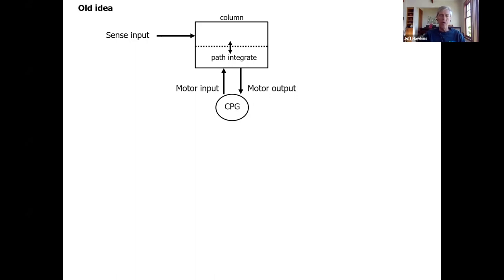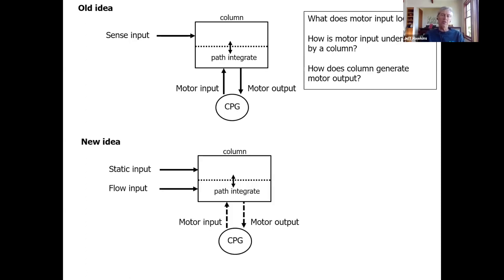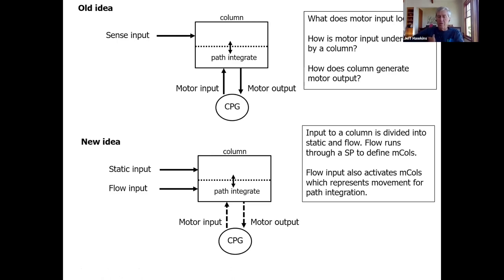This is a slide I showed a couple of times ago where I was explaining how I used to think about a column where you get sensory input and motor input, and it generates motor outputs. Then I proposed an alternate way, the new idea is that a column doesn't need a motor reference copy.